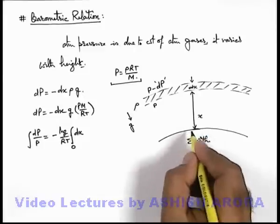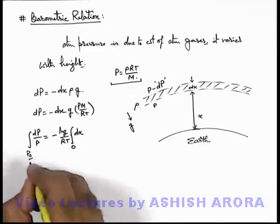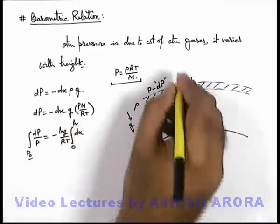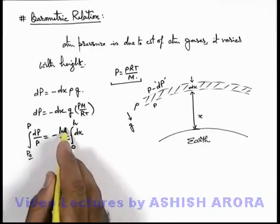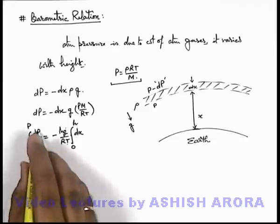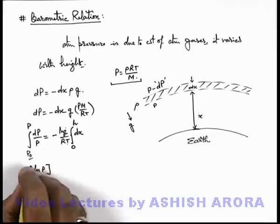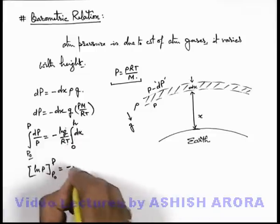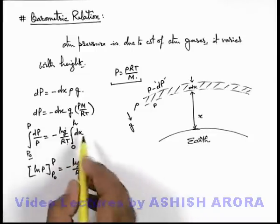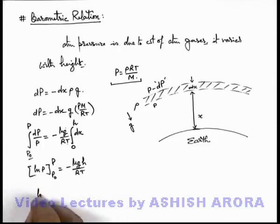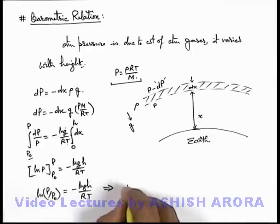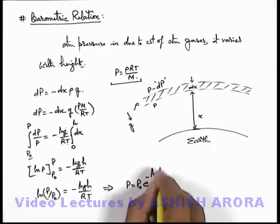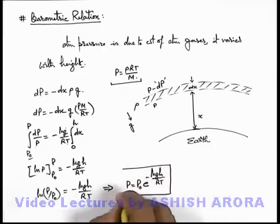Integrating this expression — at x = 0, that is on the surface of the earth, the pressure is P₀, which is atmospheric pressure at the earth's surface, and at a height h above the earth's surface the pressure is P — with acceleration due to gravity and temperature assumed constant, integration of the left-hand side gives ln(P), with limits from P₀ to P. This gives ln(P/P₀) = -Mgh/RT, and rearranging: P = P₀ · e^(−Mgh/RT). This is the barometric relation.